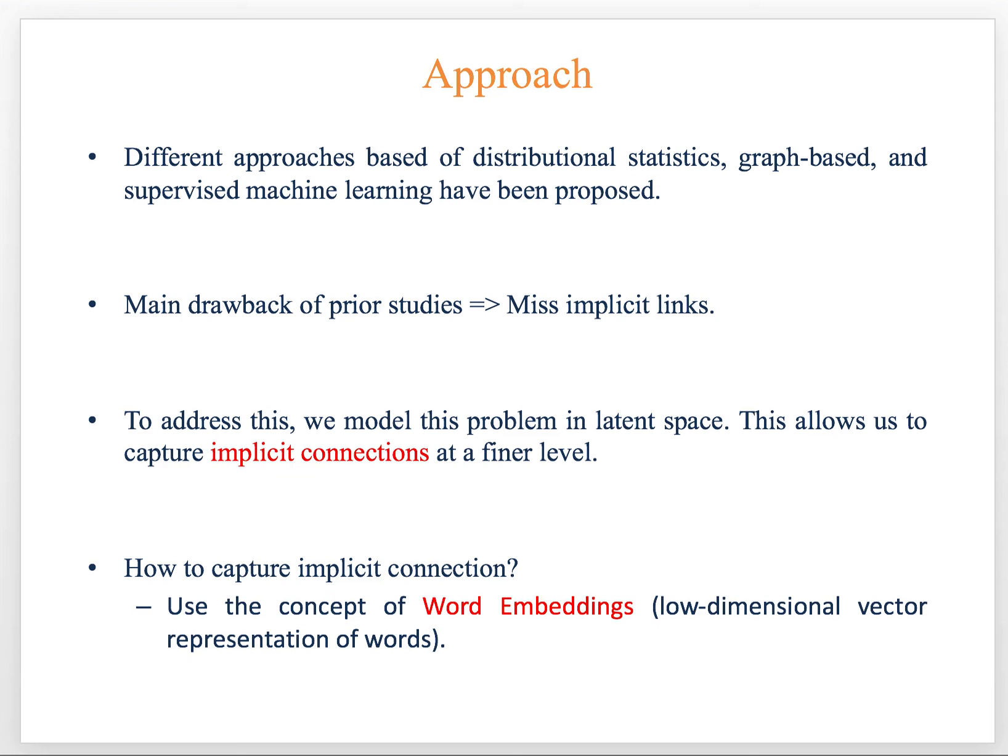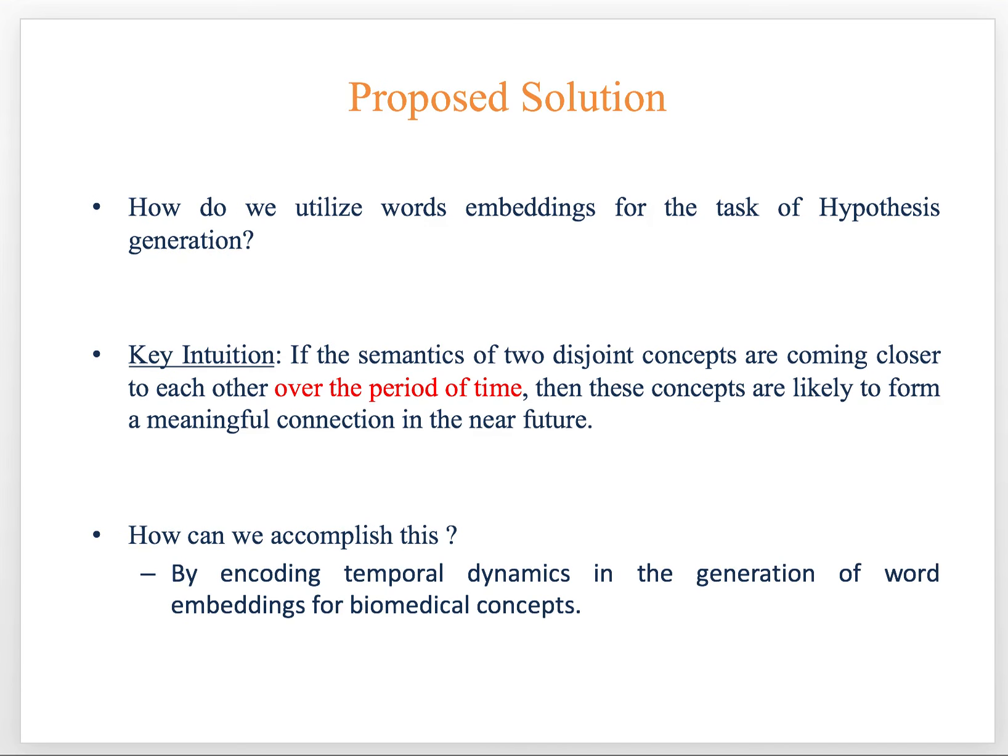To address this problem, we model this problem in latent space. Modeling in latent space allows us to capture implicit connections at a finer level. To capture implicit connections, we use the concept of word embeddings. As many of you may already know, word embeddings are dense, low-dimensional vector representations of words. So how do we utilize word embeddings for the task of hypothesis generation?